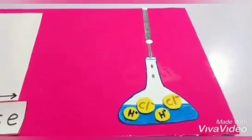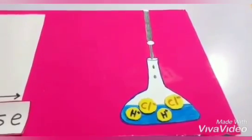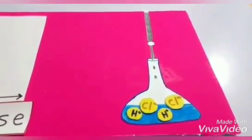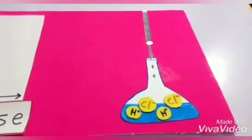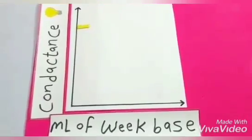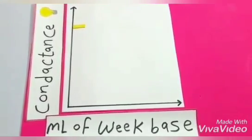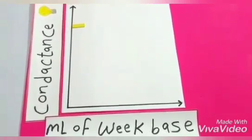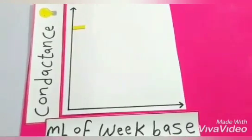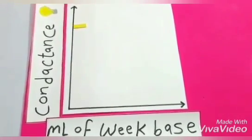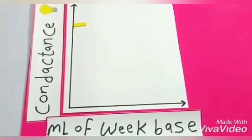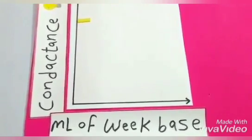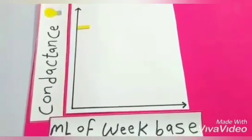This is the titration curve of strong acid and weak base. Before we start the titration, the flask only contains hydrochloric acid, which is a strong acid and highly ionized. The Conductance is high due to the presence of hydrochloric acid in solution, which is highly ionized into chloride ions and hydrogen ions, which are small in size, and this increases the Conductance.